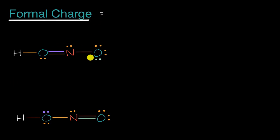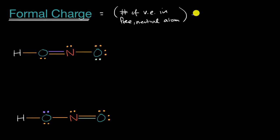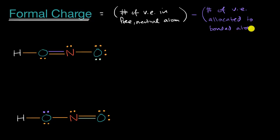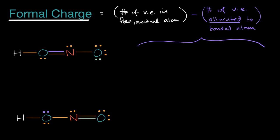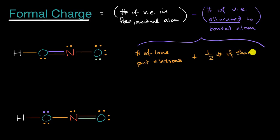So the definition of formal charge — and we're going to do this for each atom in our molecule — we're going to calculate the number of valence electrons in the free, neutral atom, and from that we are going to subtract the number of valence electrons allocated to the bonded atom. The allocated electrons are the number of lone pair electrons plus one-half of the number of shared electrons.